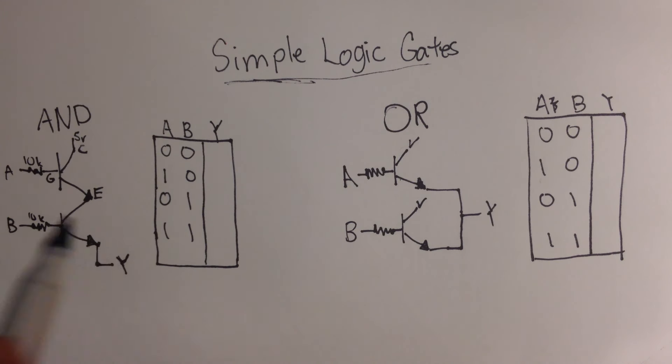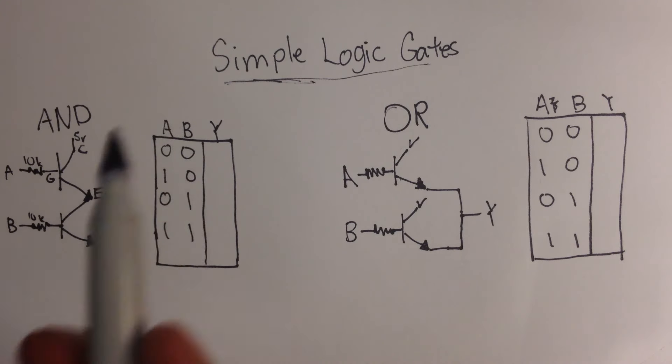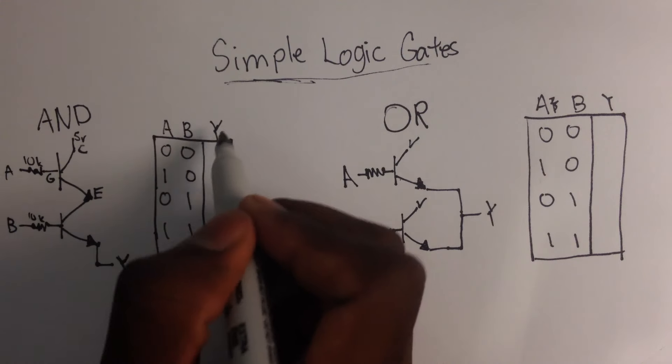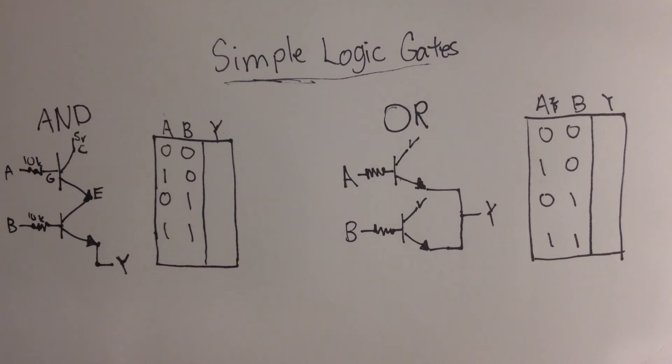Now I'm going to build this for you in a second, and we're going to fill up this truth table here. Now truth tables are important because it's just a way to write down what the value, what the output Y will be, depending on what the inputs A and B will be.